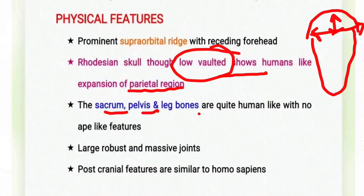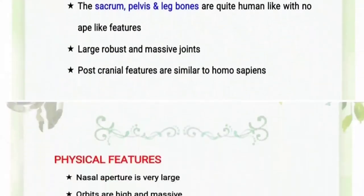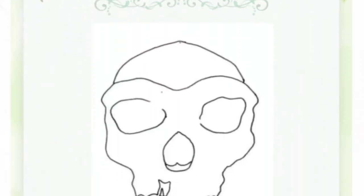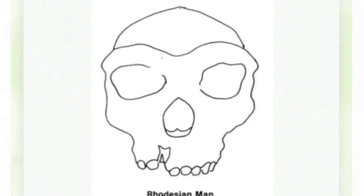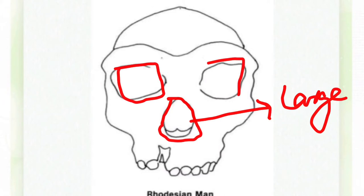The sacrum, the pelvis, and the leg bones are quite like those of humans — they have no features resembling the ape. Their joints are quite robust and massive, and the post-cranial features are similar to those of Homo sapiens. Their nasal aperture is very large, and the orbits are high and massive. Looking at the diagram, you can see the nasal aperture is quite large and the orbits are high and massive.